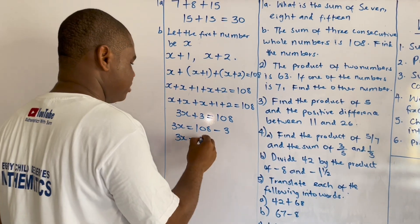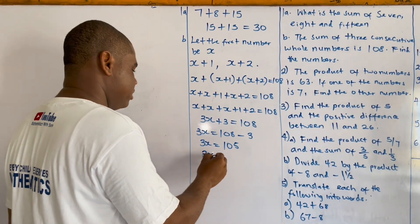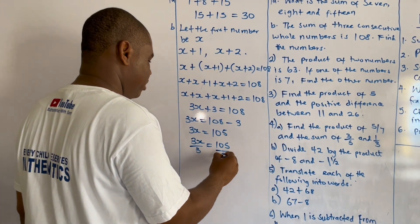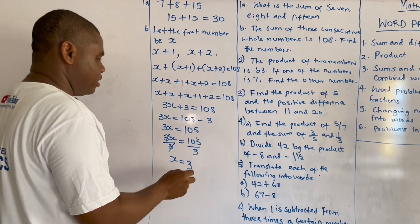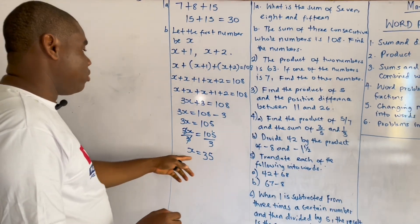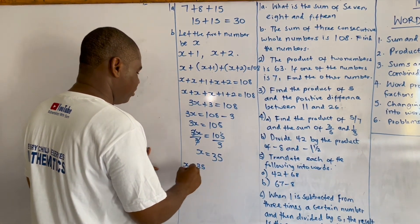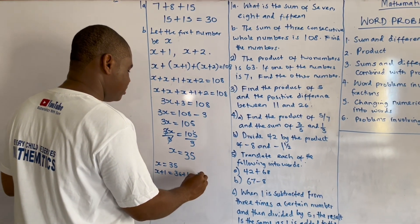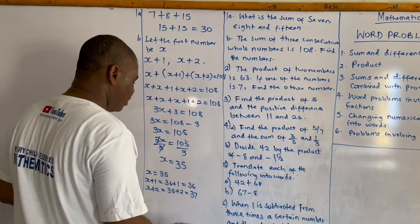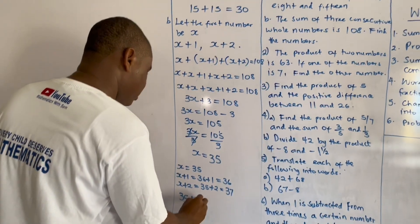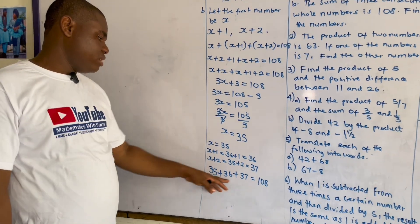Three x equals one hundred and five. Dividing both sides by the coefficient of x, which is three: three x over three equals one hundred and five over three, so x equals thirty-five. To verify: x equals 35, x plus one equals 36, x plus two equals 37. Adding 35 plus 36 plus 37 gives us 108, and as you can see, the numbers are consecutive.